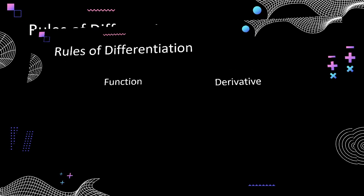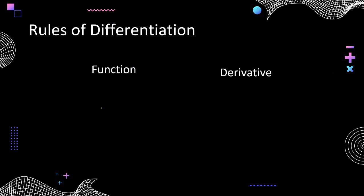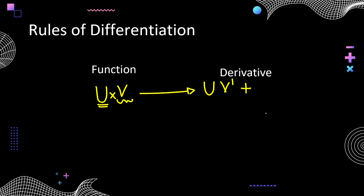Now the last two important rules. Suppose I write two functions as u and v that are multiplied. The product rule (UV rule): the derivative of u·v is — take the first function as it is and multiply by the derivative of the second, then add to that the second function as it is multiplied by the derivative of the first. So: u·v' + v·u'. First as it is times derivative of second, plus second as it is times derivative of first.